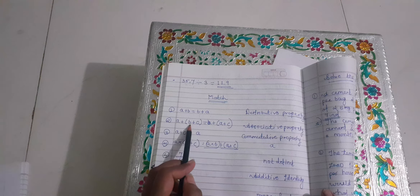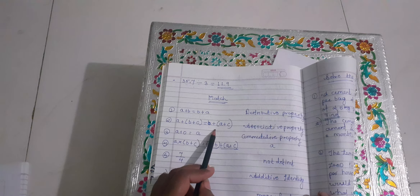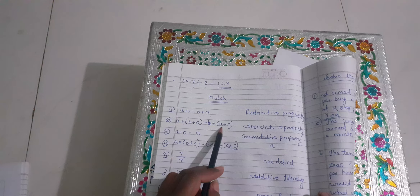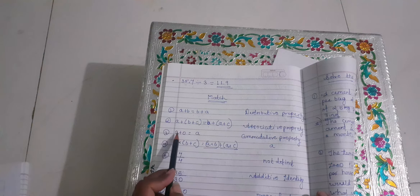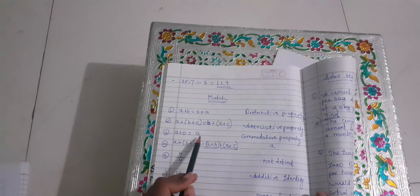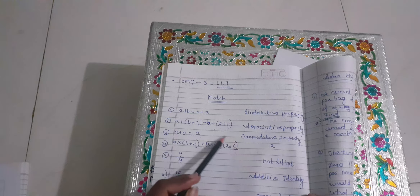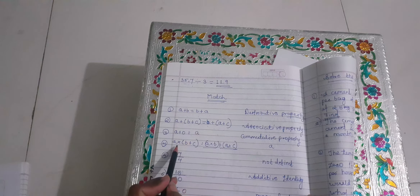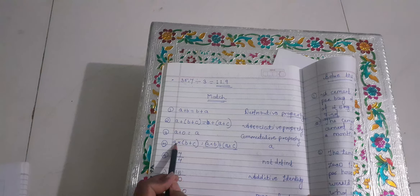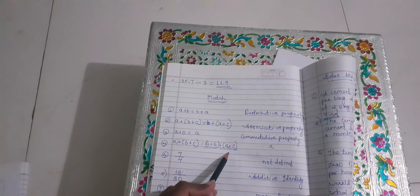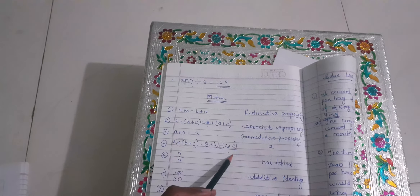Then, A plus (B plus C) converted to B plus (A plus C) — which property is this? It's the associative property. Then, A plus 0 equals A — it's the additive identity. Then, A multiplied by (B plus C) equals A times B plus A times C — which property is this? It's the distributive property.